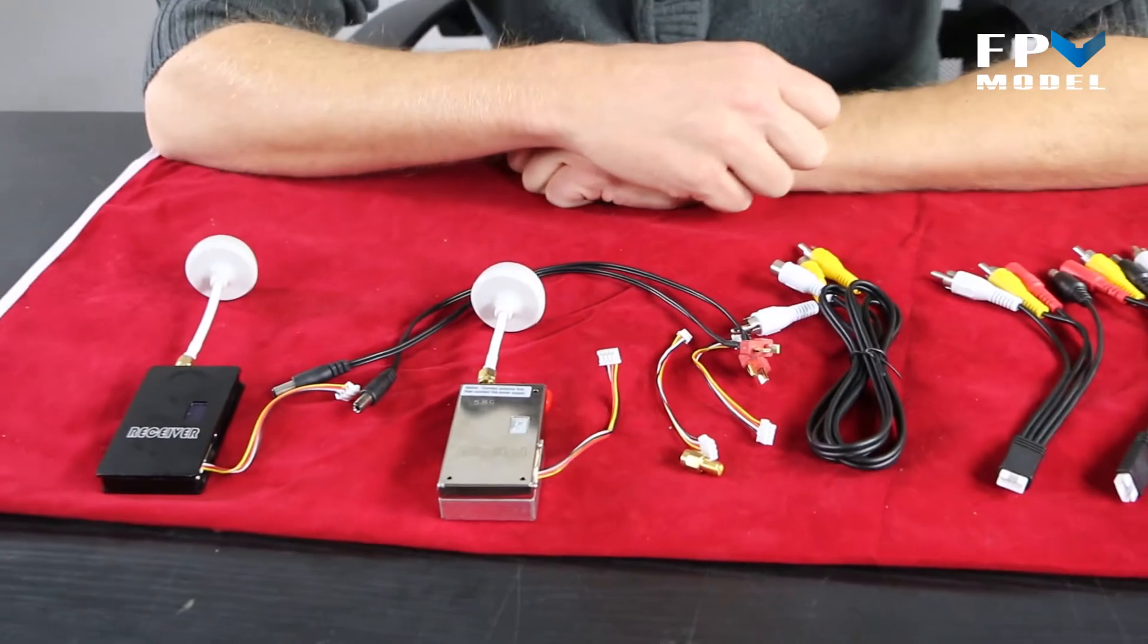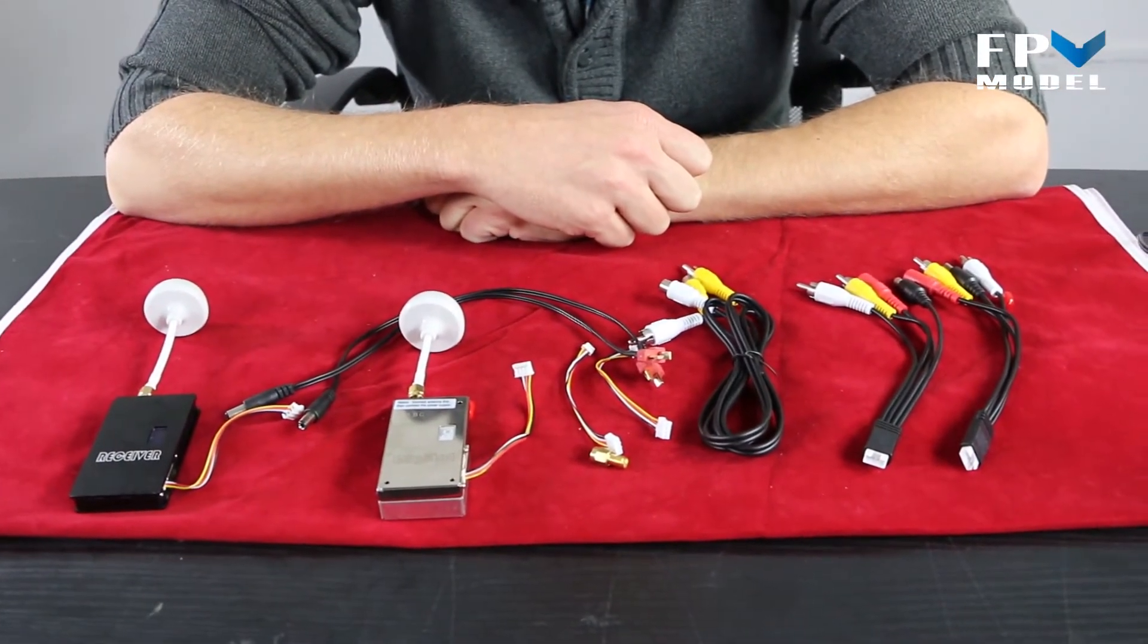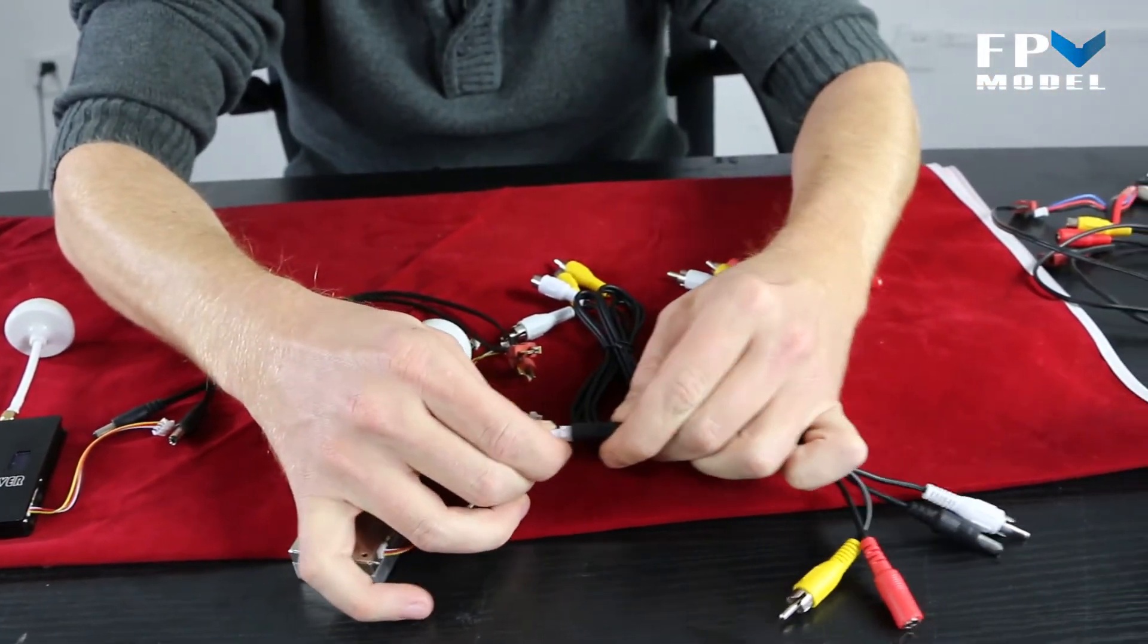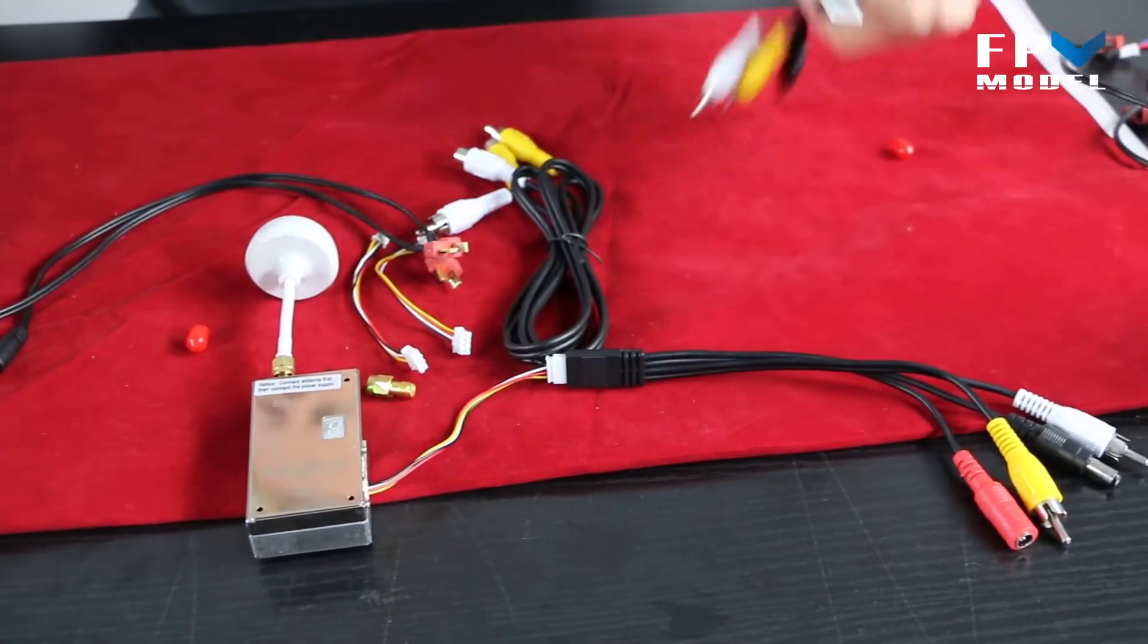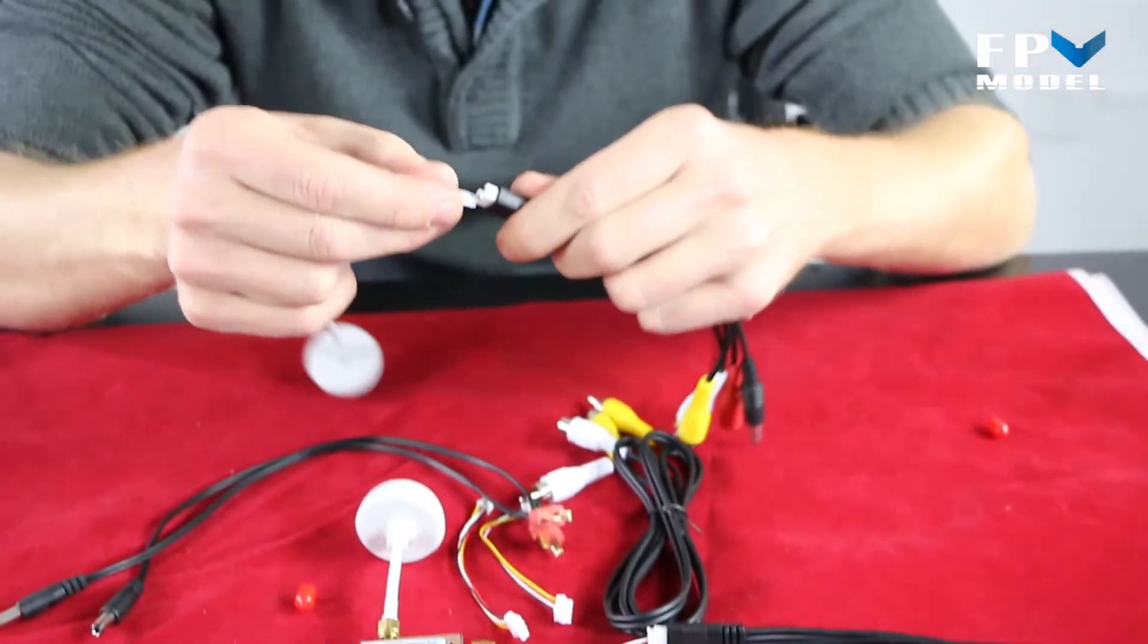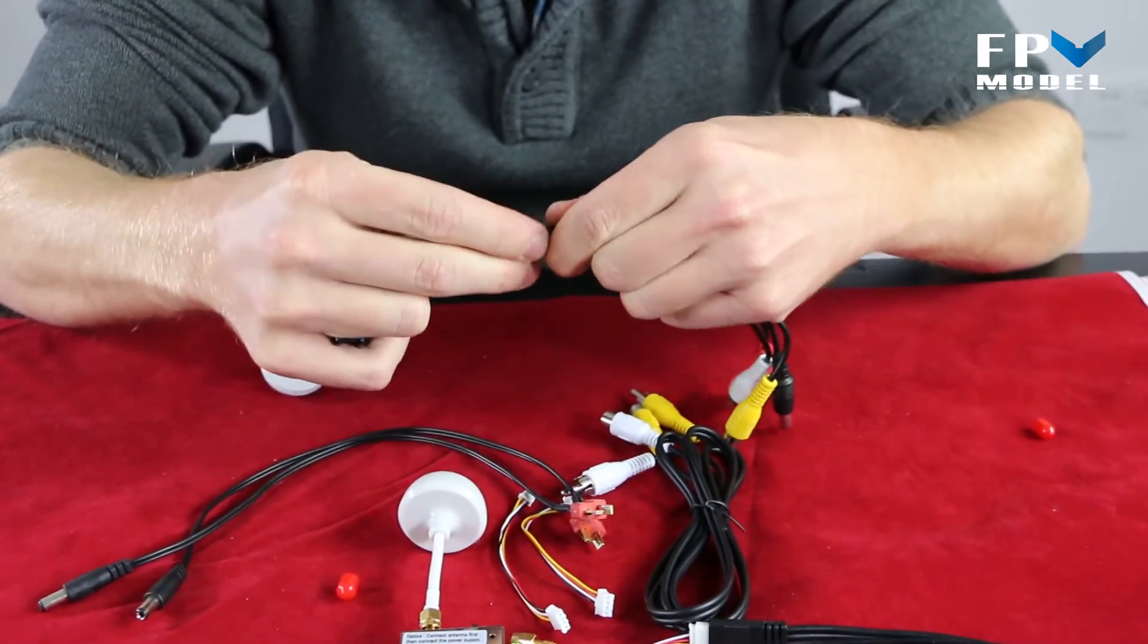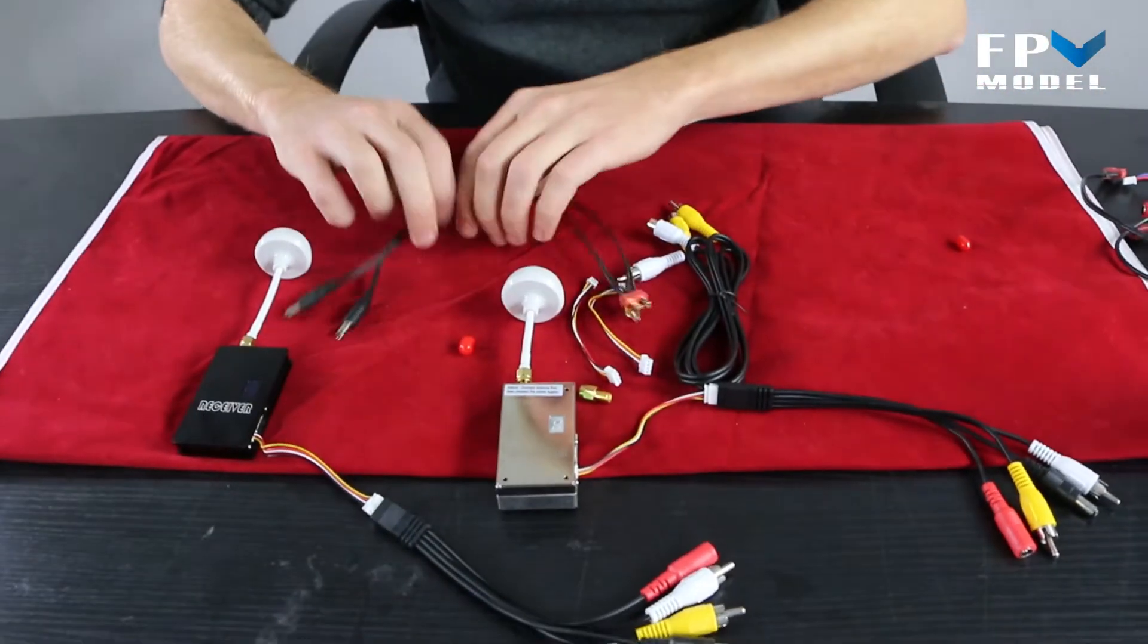Now, once we have the transmitter and the receiver connected, we can go ahead and connect the audio, video, and power plugs. So, in order to do that, it's a very easy setup. We just plug the cables into the transmitter, and then we can also plug the cables into the receiver. So, now all cables are connected.